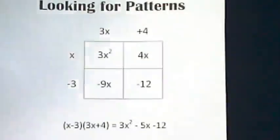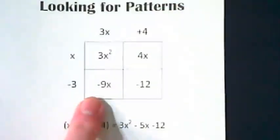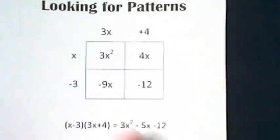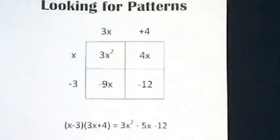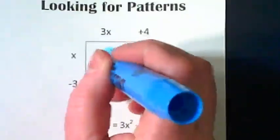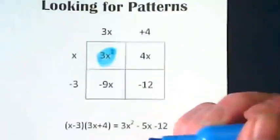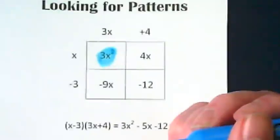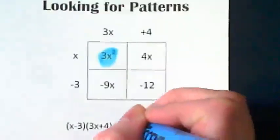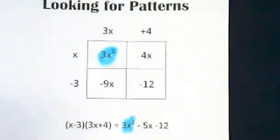Today we're going to start with looking for patterns in this box and these down here and see where we can notice things that are the same or where they're coming from. So I'd like you to highlight the 3x squared that's in the box, and then highlight its match down below.